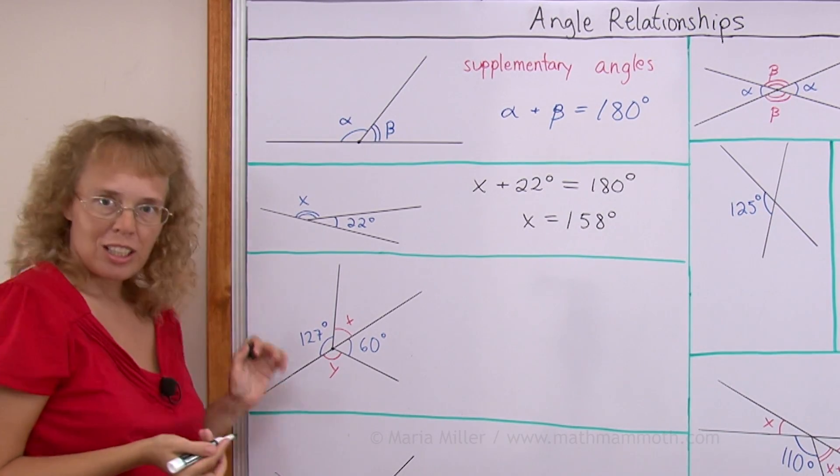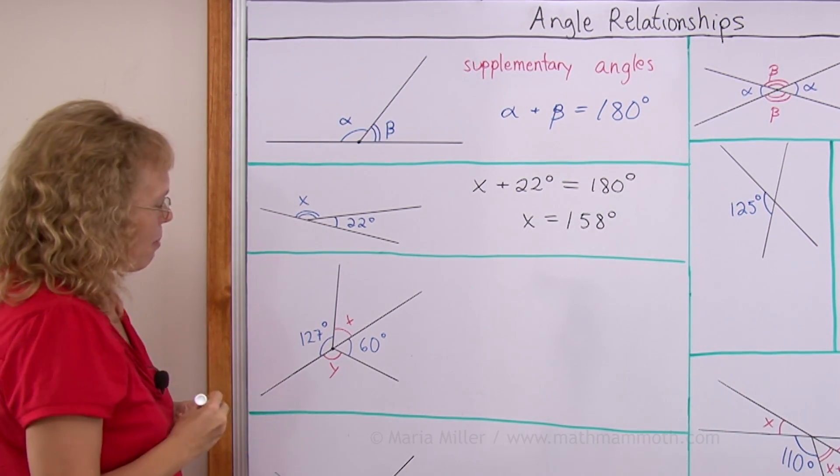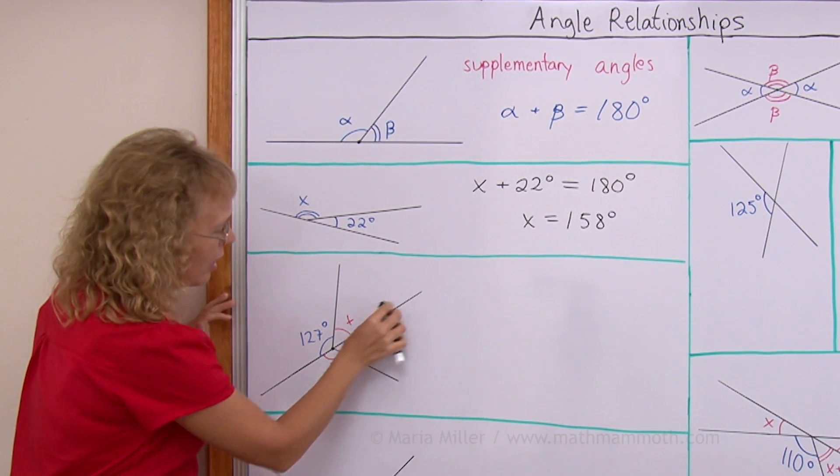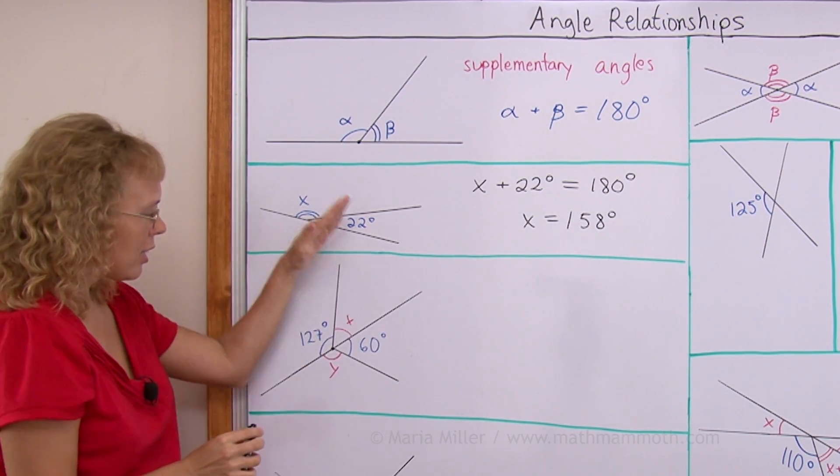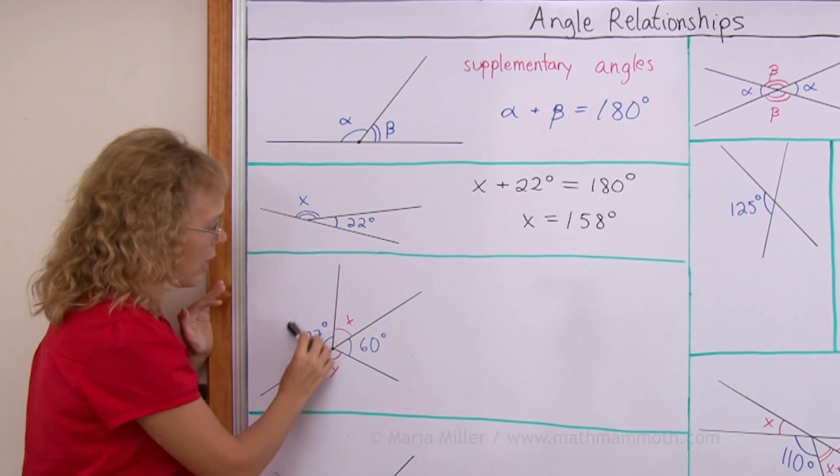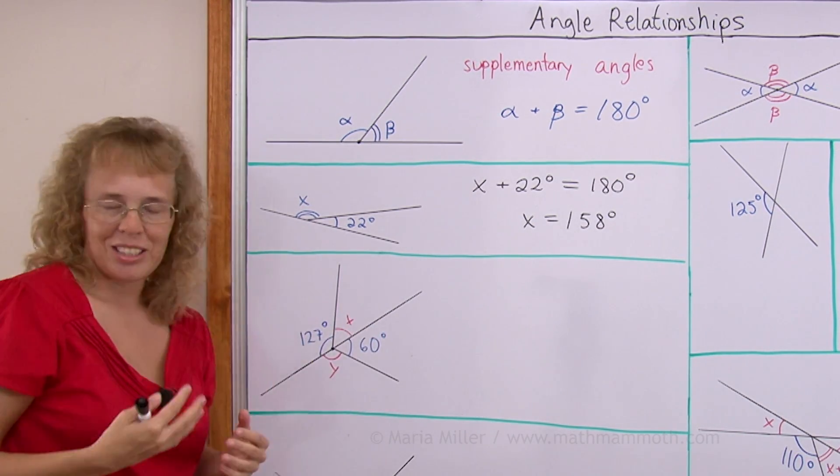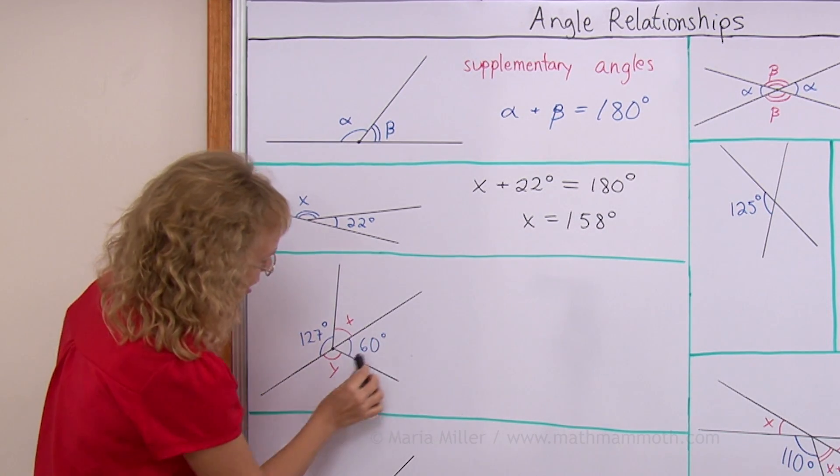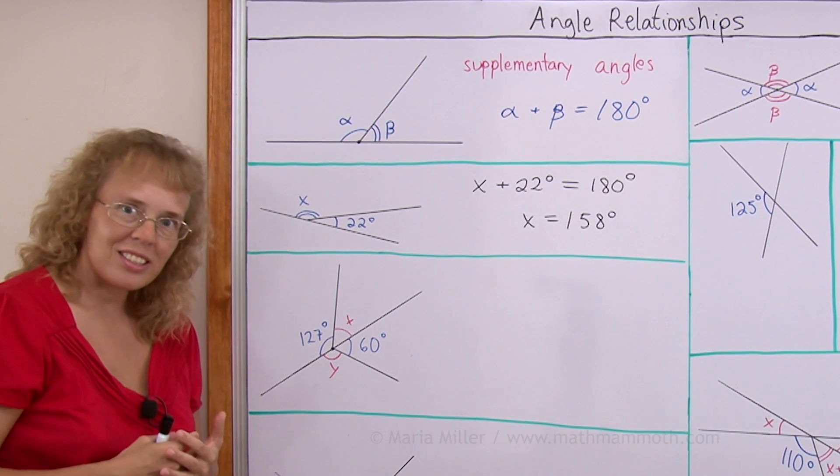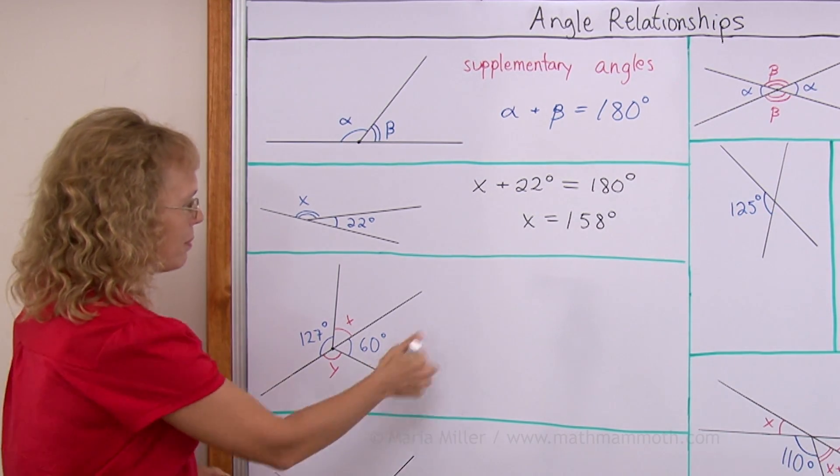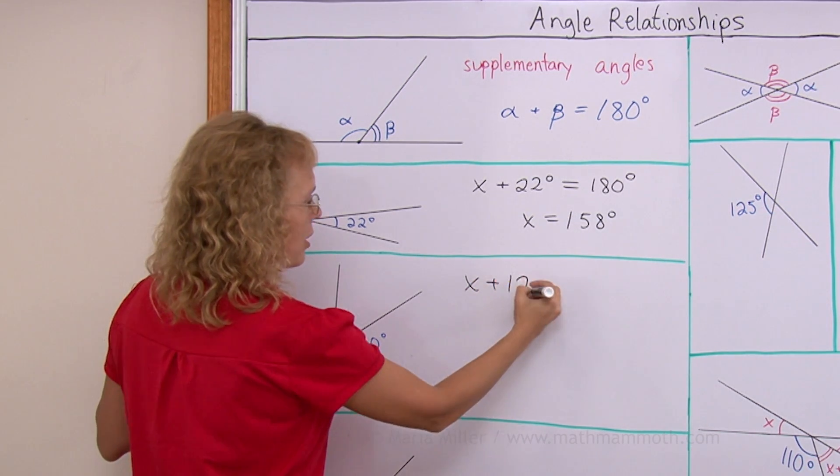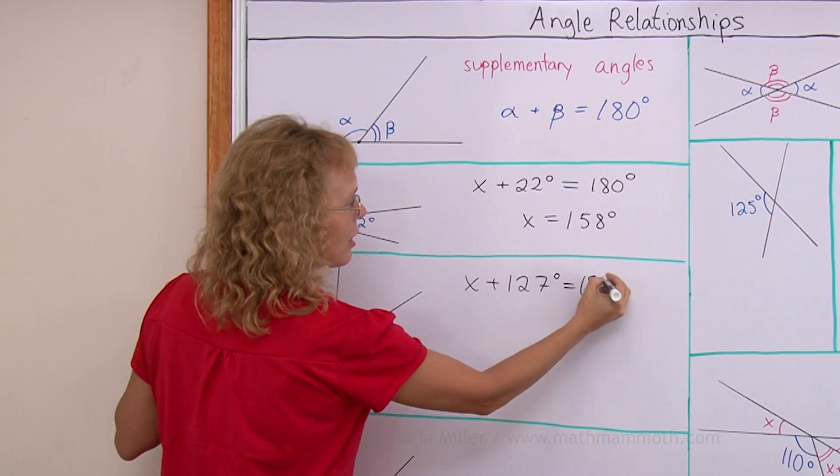Now here it looks a little bit more complex but actually it is just two of these kind of diagrams because I have this one line here and on this side of it we have 127 degrees and X. So these two together are 180 degrees. And then also on this underside, 60 degrees and Y are together 180 degrees. So I will get two equations: X plus 127 degrees equals 180.